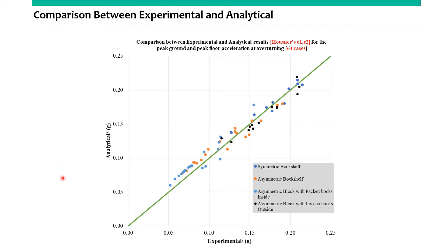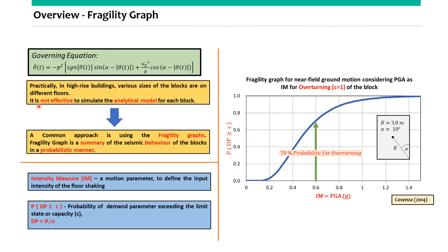This is the final comparison result between analytical and experimental results for the peak ground acceleration at overturning. As we can see, our analytical model can be used for the prediction of experimental results.